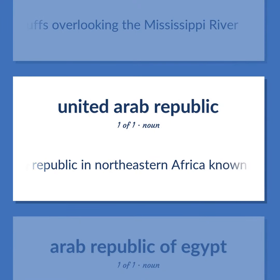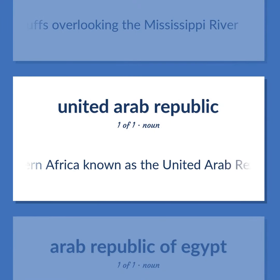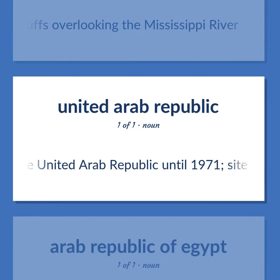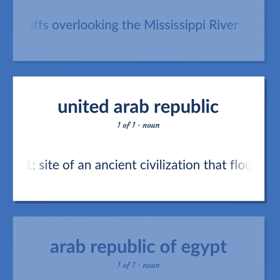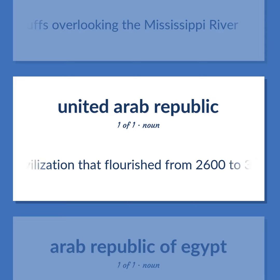A republic in northeastern Africa, known as the United Arab Republic until 1971. Site of an ancient civilization that flourished from 2600 to 30 BC.